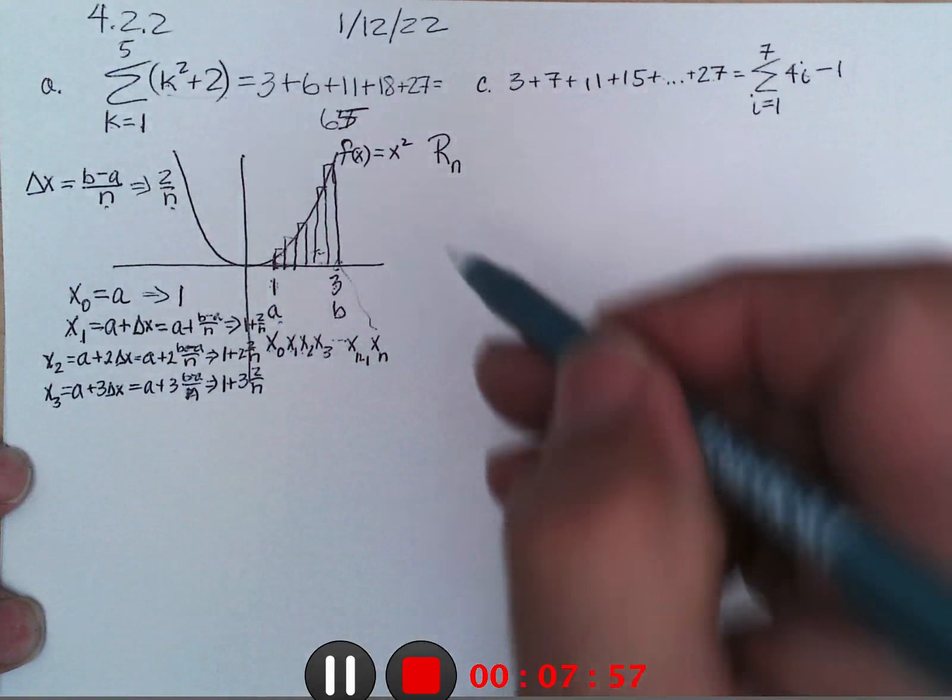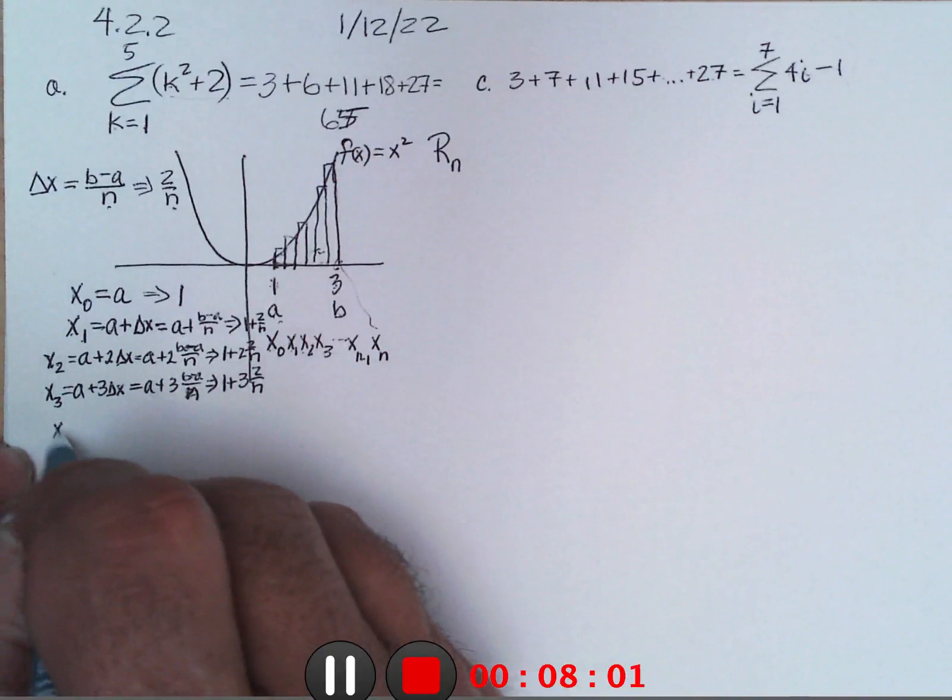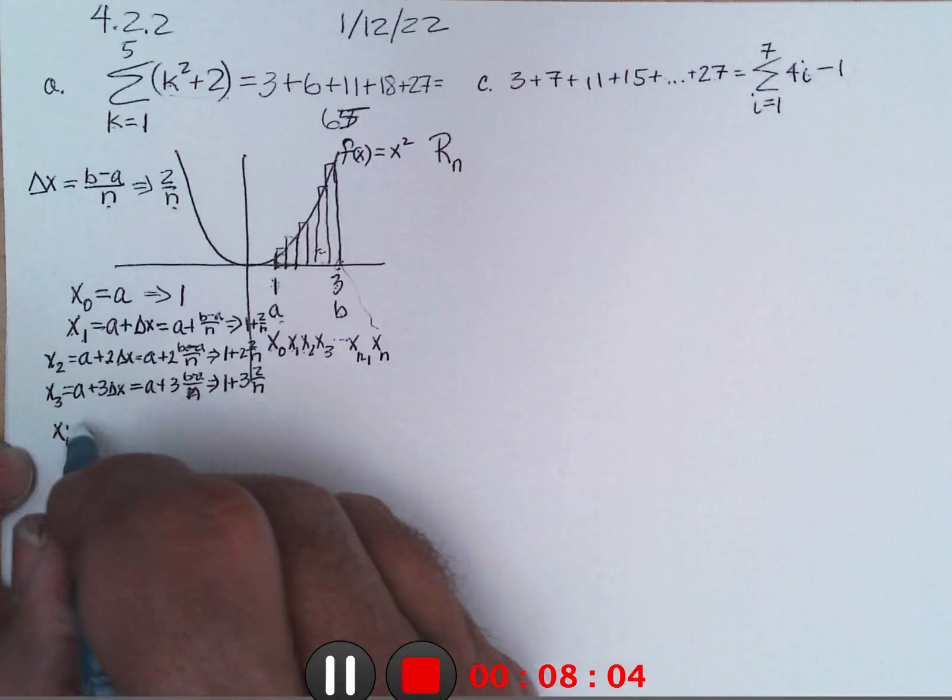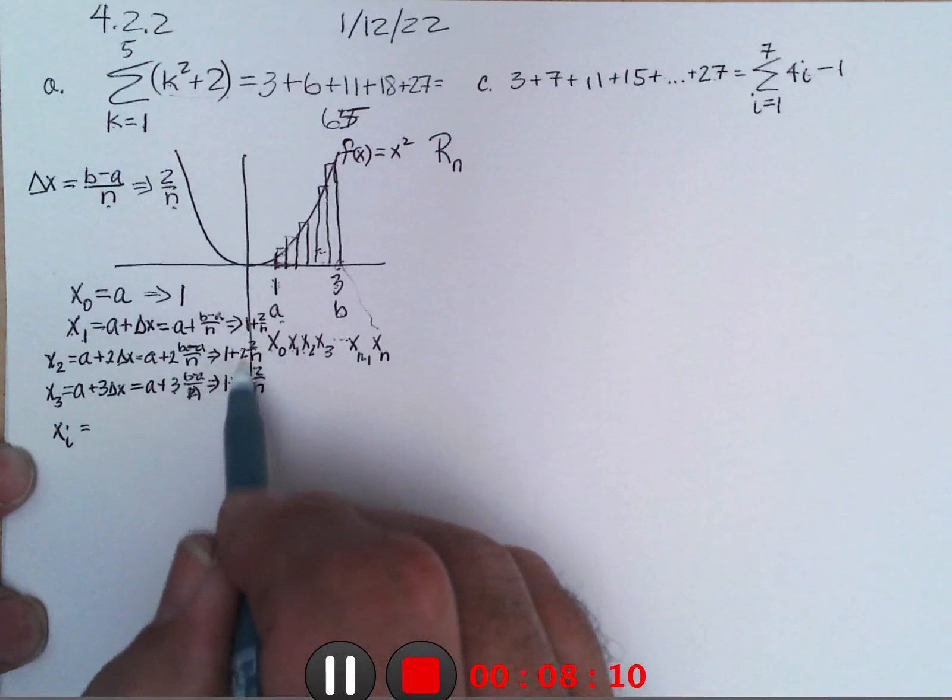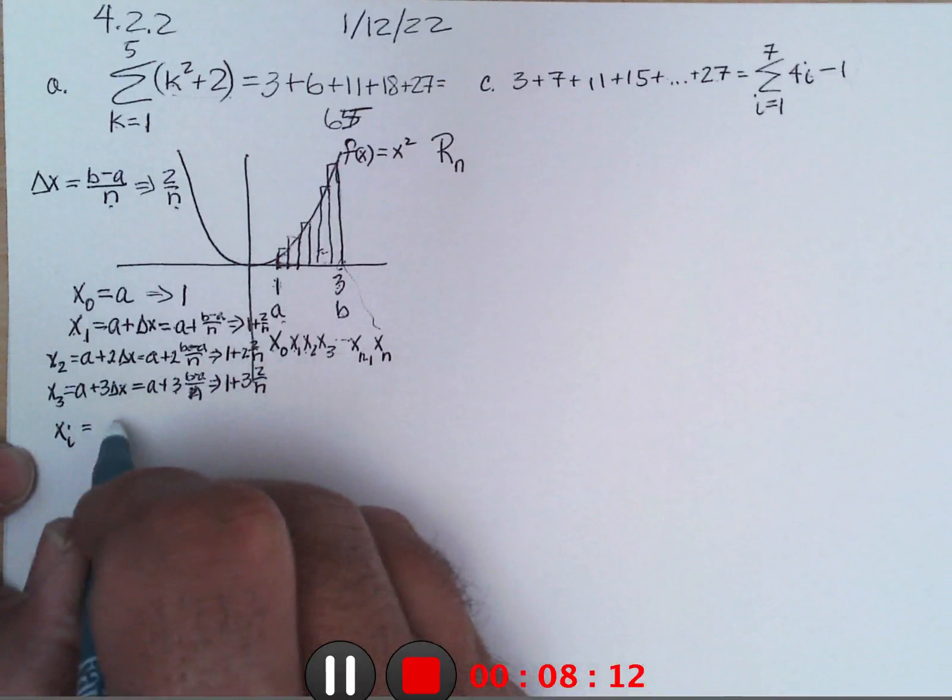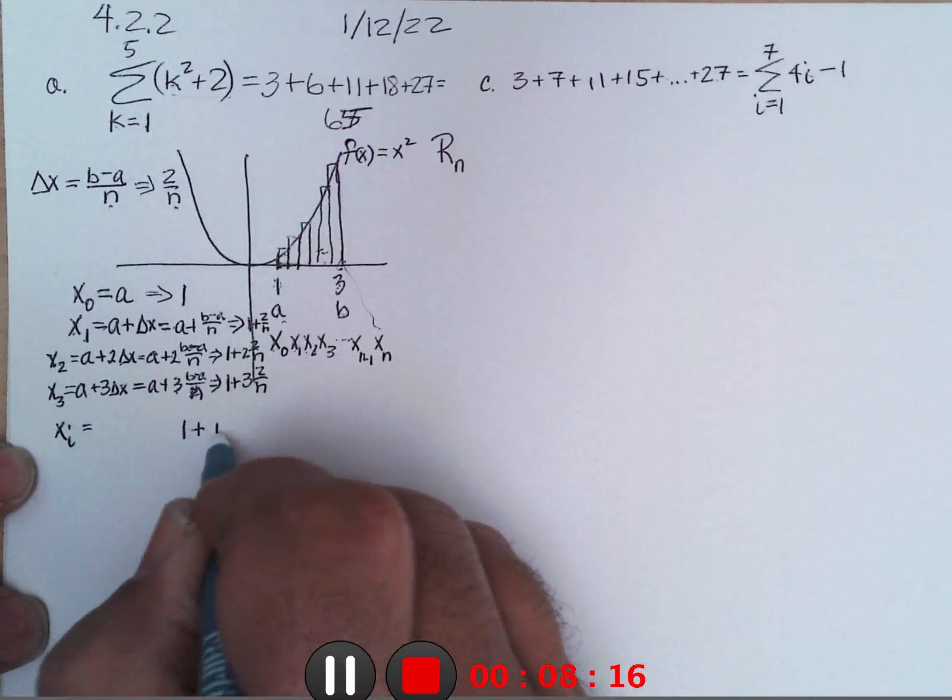And the next one, x3, would be a plus 3 widths, or a plus 3 times b minus a over n, which in this particular case would be 1 plus 3 times 2 over n. So in particular, any x in here, x sub i, would be, as you can see it's 1, 2, or 3 of these. So it would be, in this particular case, 1 plus i times 2 over n.